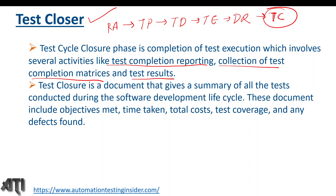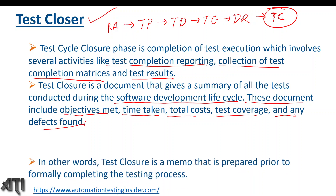Test closure is a document that gives a summary of all the tests conducted during the software development lifecycle. The documents prepared in test closure activities include the test completion report, which covers whether objectives were met, the testing duration, total cost of testing, test coverage, and any defects found.